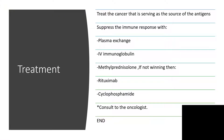How do we treat? The first definitive step is to treat the affected cancer — treat the cancer that is serving as the source of the antigens. Suppress the immune response, since this is an immunological response. We can have plasma exchange, intravenous immunoglobulin, and methylprednisolone. If you are not winning, then you can use rituximab or cyclophosphamide.